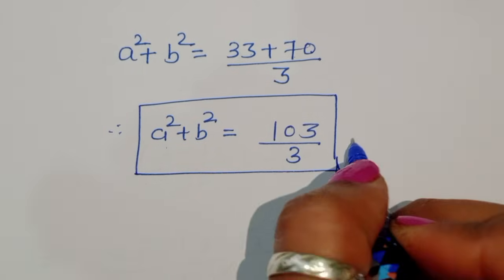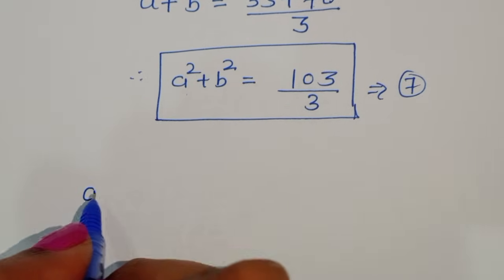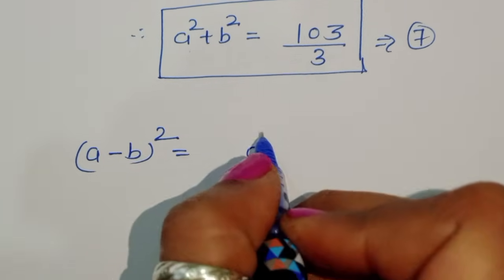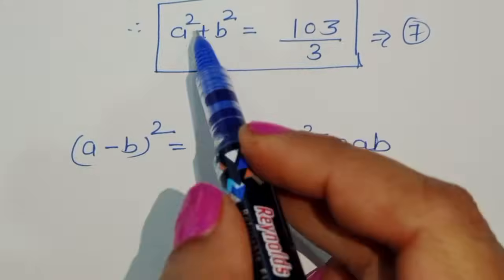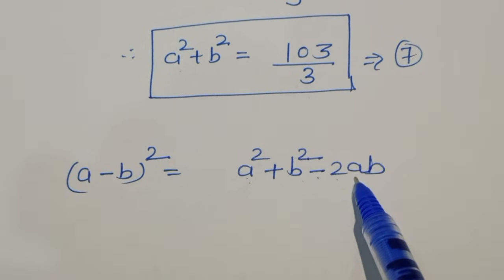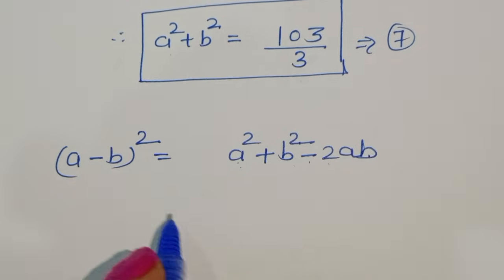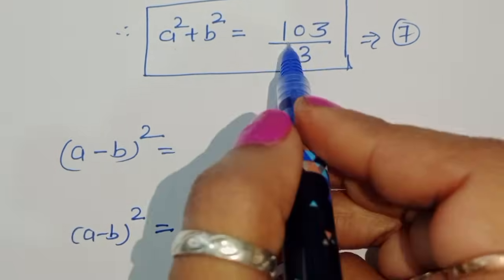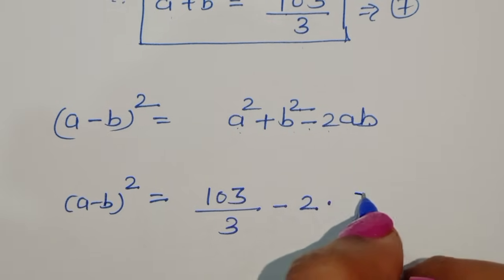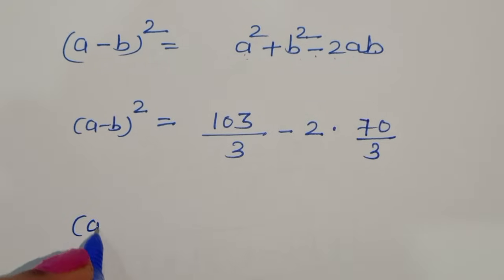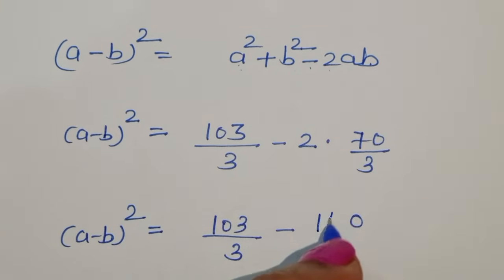We need to find a minus b. We use the formula: a minus b whole square equals a square plus b square minus 2ab. We substitute a square plus b square equals 103 divided by 3, and ab equals 70 divided by 3. So a minus b whole square equals 103 divided by 3 minus 2 times 70 by 3, which equals 103 over 3 minus 140 over 3.